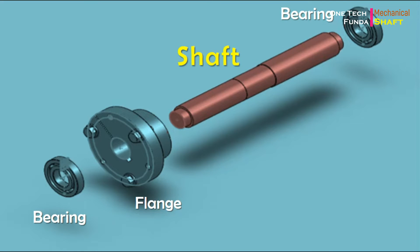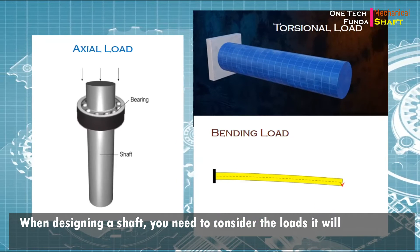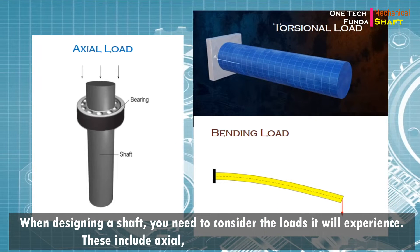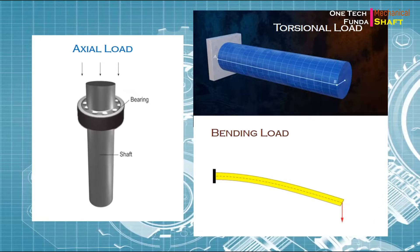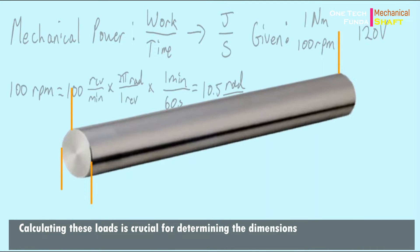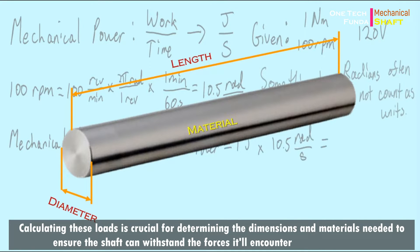Let's talk about the nitty-gritty of shaft design. When designing a shaft, you need to consider the loads it will experience. These include axial, torsional, and bending loads. Calculating these loads is crucial for determining the dimensions and materials needed to ensure the shaft can withstand the forces it'll encounter during operation.